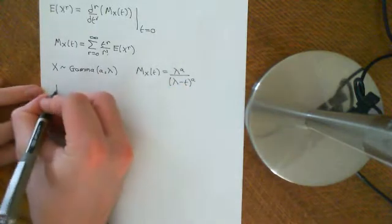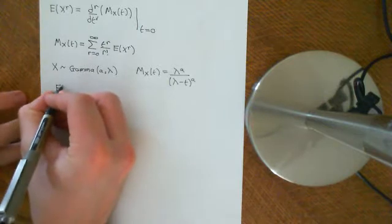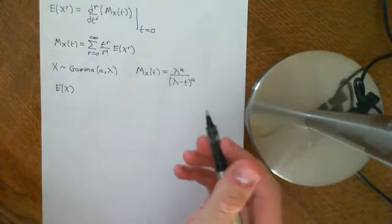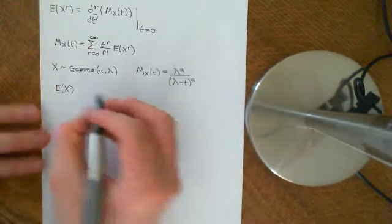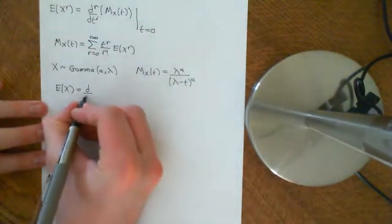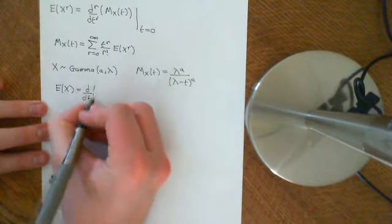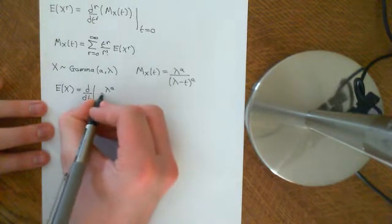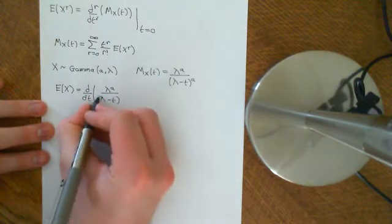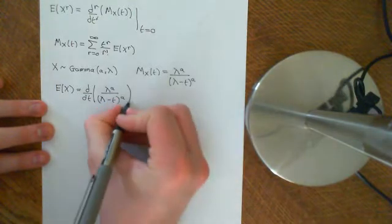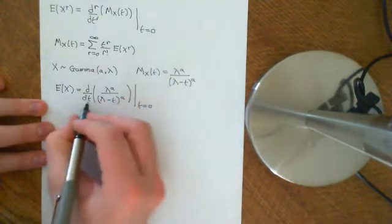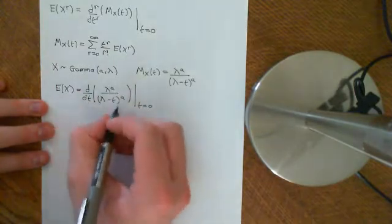So if we now want the first moment — the expected value of X, so we want to calculate the mean — then all we need to do is differentiate this moment generating function with respect to t and evaluate it at t equal to 0. So stick in the moment generating function here, and then evaluate at t equal to 0. So firstly, what we need to do is differentiate this.